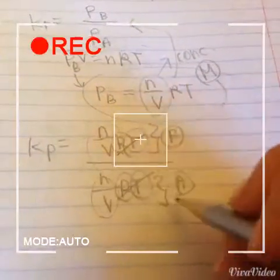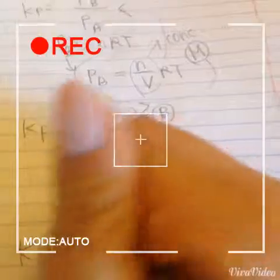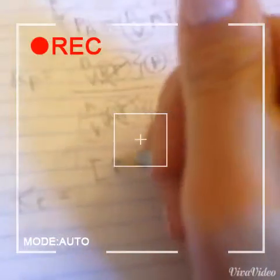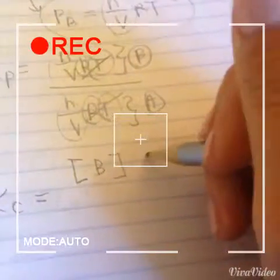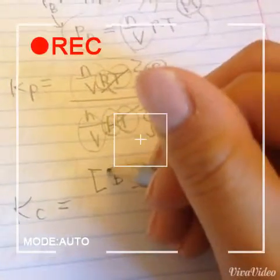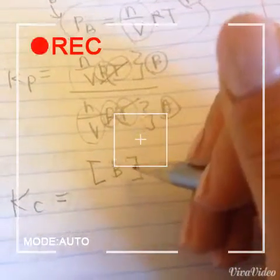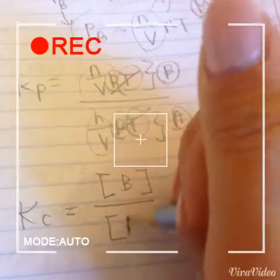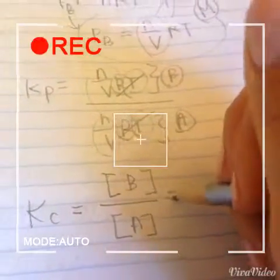So Kc is therefore equal to this. So remember, this is the molarity, moles of B over the volume, total volume, over A.